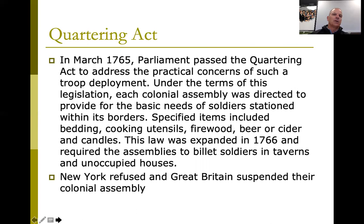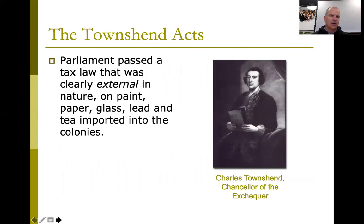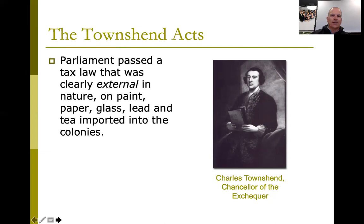The Townshend Acts were passed by Parliament as a workaround: since Franklin said external taxes were acceptable, Parliament imposed taxes on goods imported into the colonies — glass, lead, and tea. But by this point, colonists were in no mood for any taxes at all, especially after the boycott victory. So they boycotted again, trying to get their way once more.